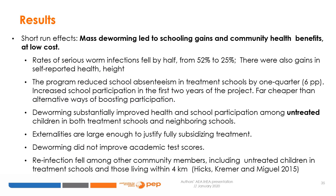The short-run results indicate that mass deworming led to schooling gains and community health benefits at a low cost. Rates of serious infections fell by half, and the program reduced school absenteeism by one quarter and increased school participation — far cheaper than any other known alternative to boost school participation. Deworming substantially improved health and school participation among untreated children in both treatment schools and neighboring schools, which is the externality component of the program. These externalities are large enough to justify fully subsidizing the treatment. However, deworming did not improve academic test scores, and reinfection among other community members was still present.